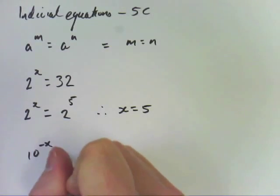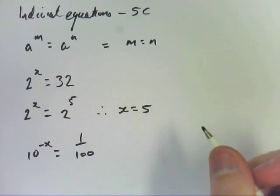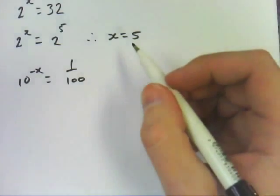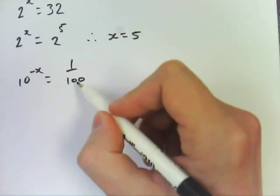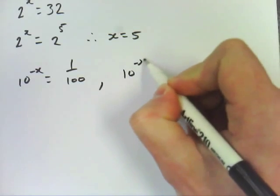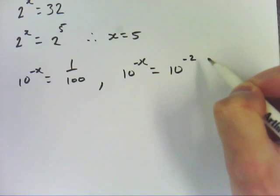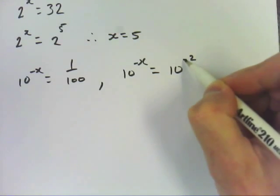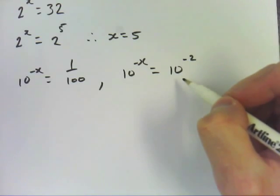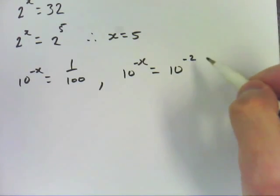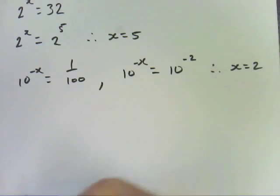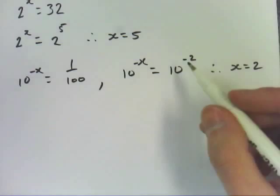So, 10 to the minus x equals 1 over 100. Yeah, so I need to set this one as a base of 10. So, 10 to the minus x equals what is it? 10. It's 10 squared underneath, which means it's a negative. 10 squared is 100, yeah? And it's underneath, so it's a negative. So, therefore, x equals 2. Why doesn't x equal negative 2? Because they're both negative, yeah.